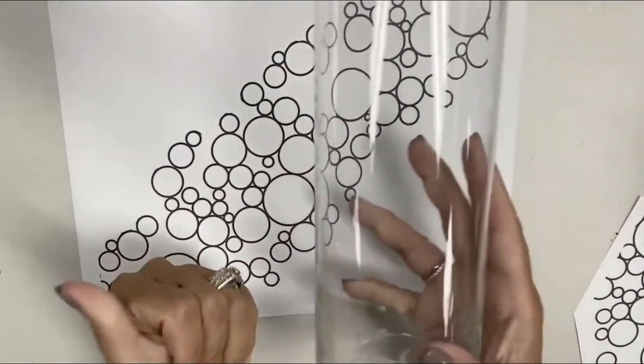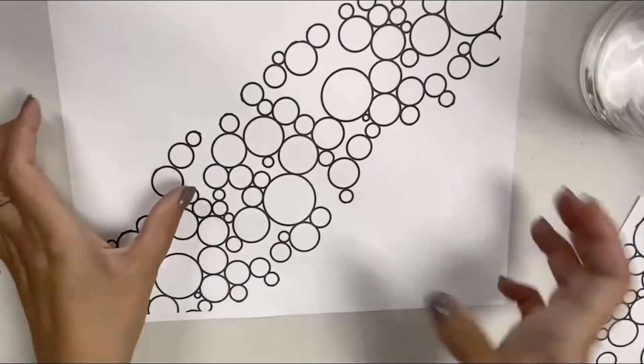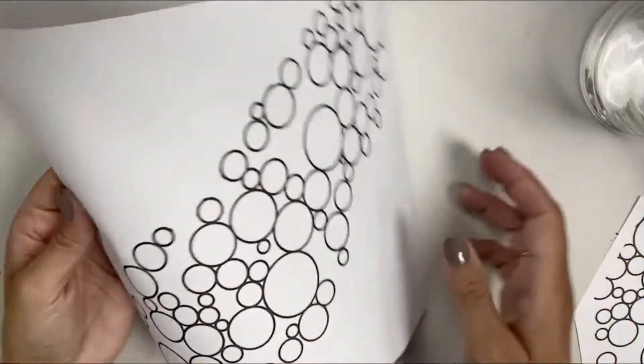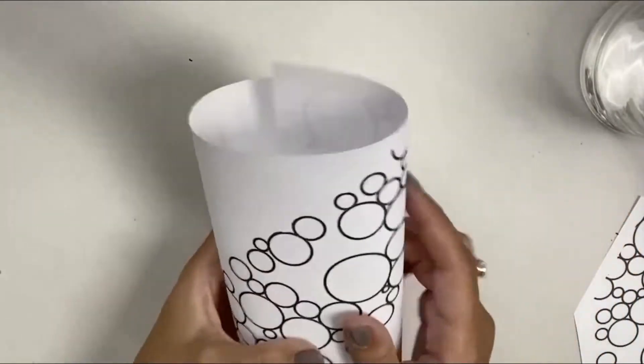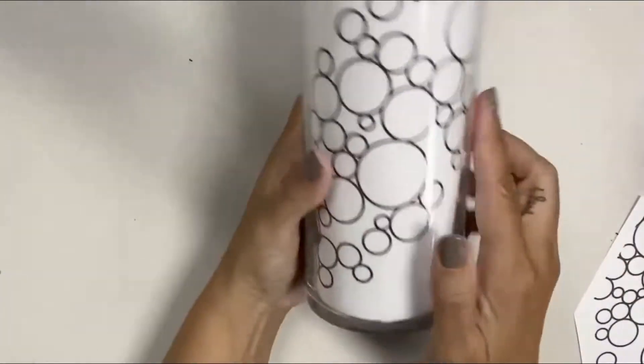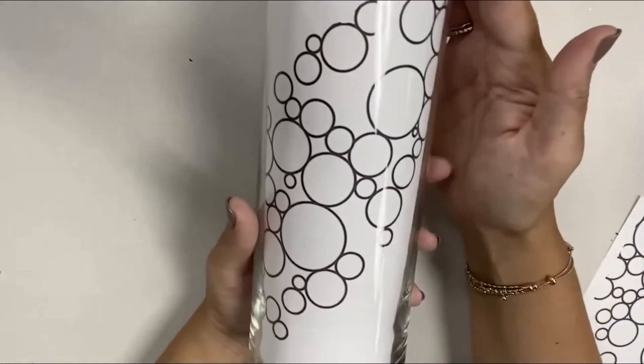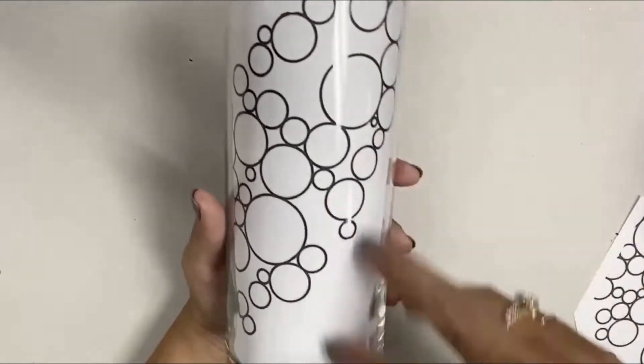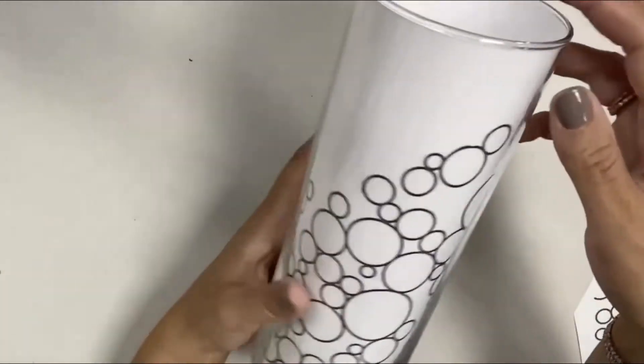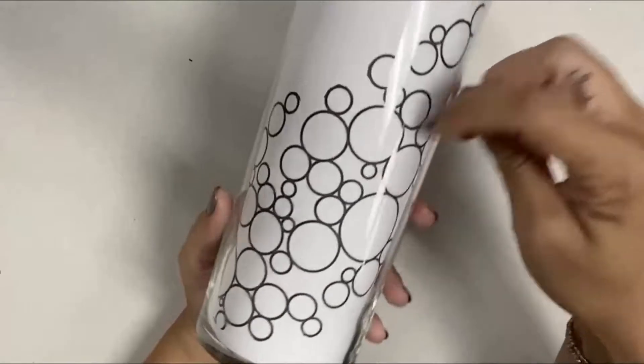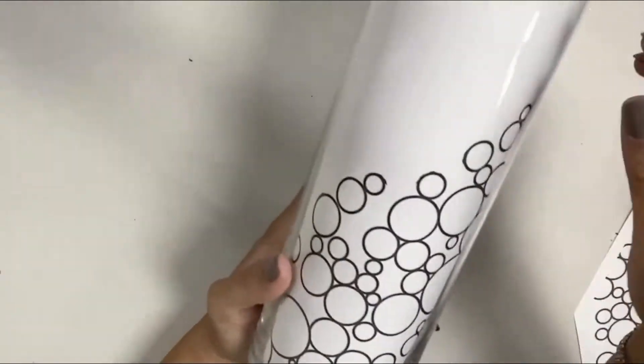This is just actually from the Dollar Tree. So the idea is that I will take this paper and drop it down in here. This is about a nine-inch vase, so this paper fits perfectly, and I'm going to trace the design on or I'm going to paint it on.